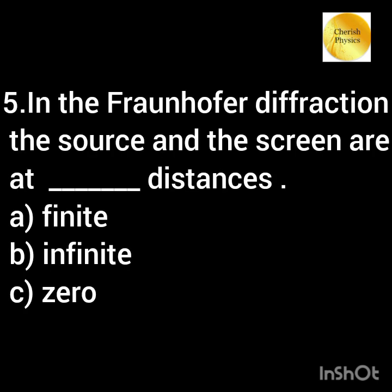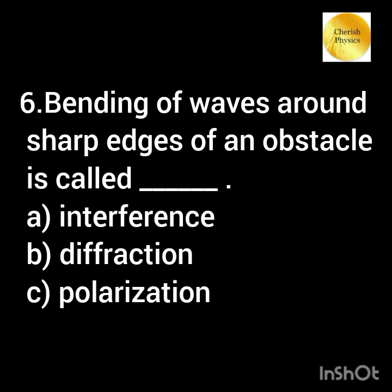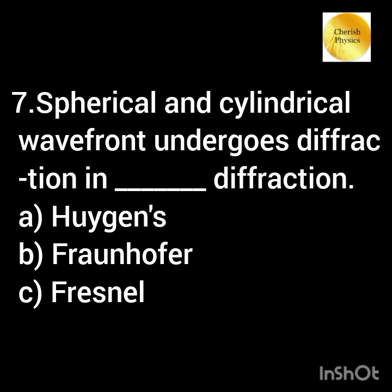In the Fraunhofer diffraction, the source and the screen are at dash distance. Bending of waves around short edges of an obstacle is called dash. Spherical and cylindrical wavefronts undergo diffraction in dash diffraction.